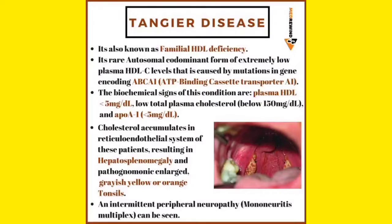In Tangier's disease, there is familial HDL deficiency. The plasma HDL level decreases to less than 5 mg/dL. Because the good cholesterol is not present, the bad cholesterol will be deposited in various organs of the body.